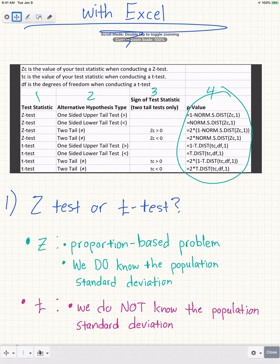The criterion I'm most used to when dealing with Excel is whether we know the population standard deviation or not. If it's a proportion-based problem, then we're going to use a Z test no matter what.